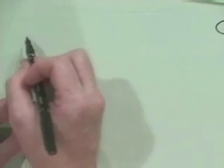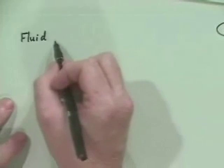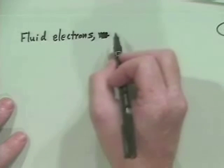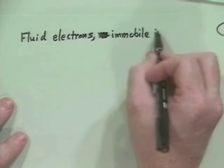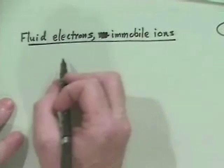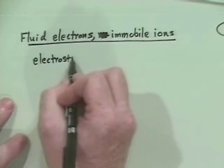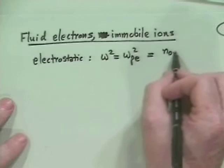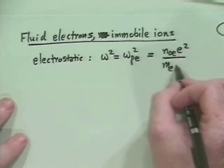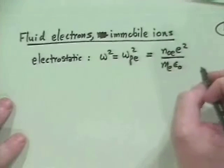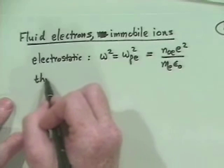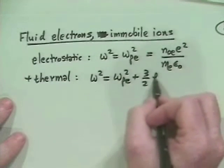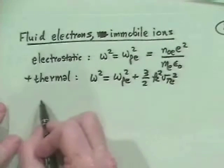Our type of basic types of modes if we had most typically fluid electrons and neutralizing immobile ions. What we found was that if we had electrostatic oscillations, we just had omega squared is equal to omega p e squared, which is n naught e e squared over m sub e epsilon naught. And we had some handy-dandy formulas with that. And if we added plus thermal motion, we then had omega squared is equal to omega p e squared plus three halves k squared v thermal e squared. And then if we had electromagnetic, then we got light waves, c squared, k squared, omega squared is equal to c squared, k squared. But then we also had the plasma frequency as a minimum sort of frequency.